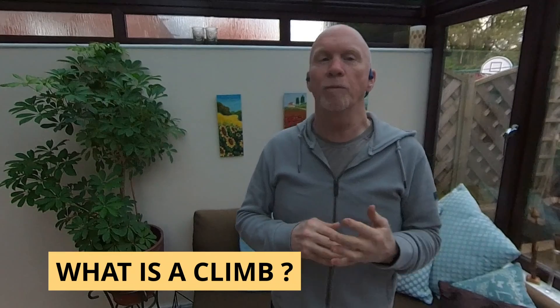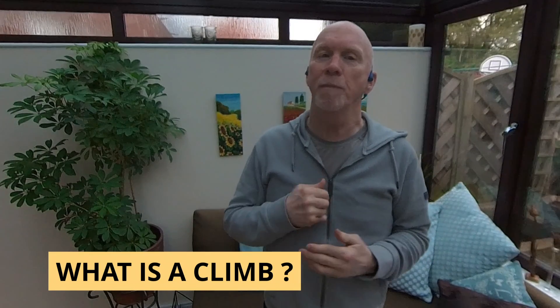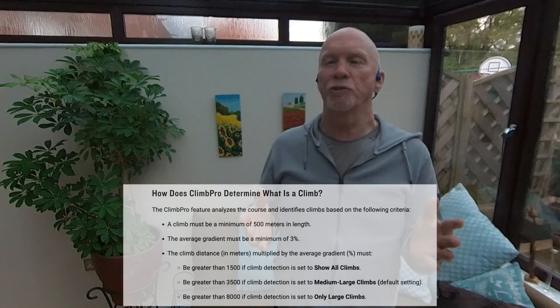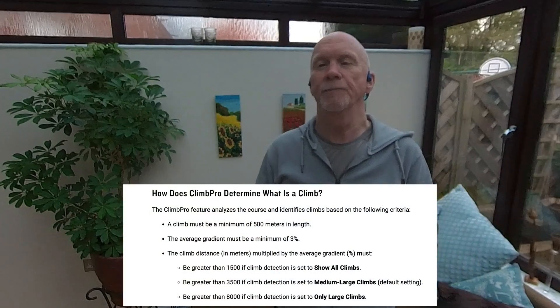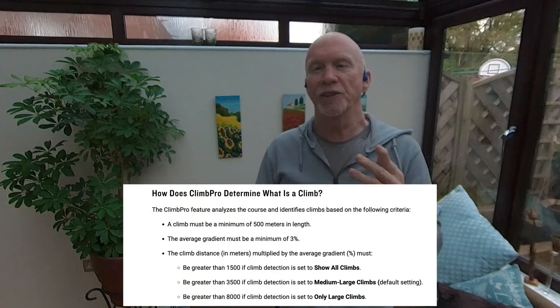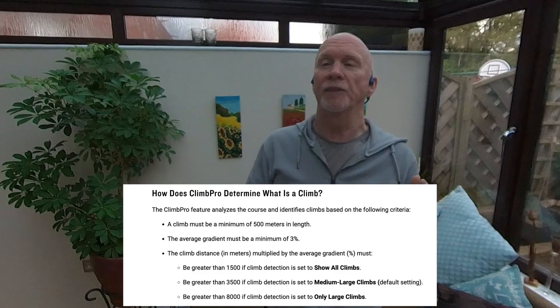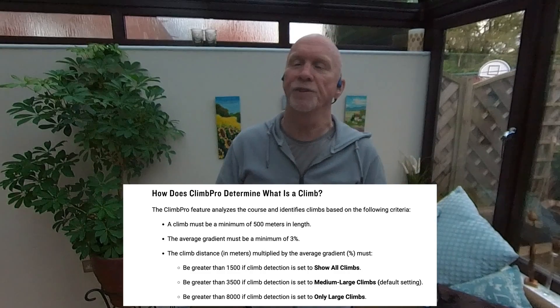On recent firmware updates, a box has been added above your position marker showing the current gradient, which frees up a data field at the bottom for something else. There are two rules that need to be met in order for a hill to show up as a climb: it needs to be a minimum of 500 meters in length and must have an average gradient of at least three percent.